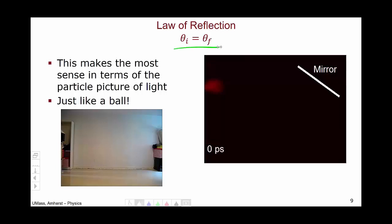Now reflection makes the most sense in terms of the particle picture of light. It's easiest to see if we just imagine light as a ball, a photon as a ball. As a ball flies, you can see that the incident angle and the final angle are the same as the ball bounces.